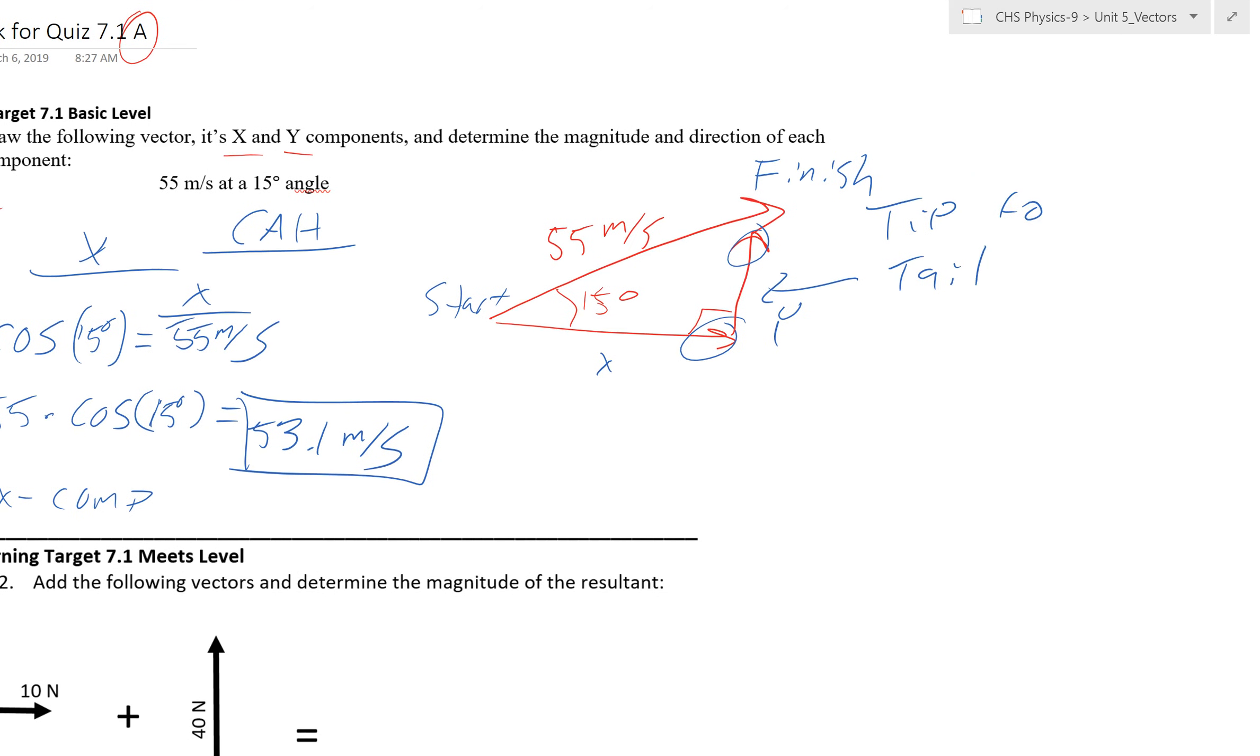And then for the y direction, we just have the same thing, but sine is SOH in SOHCAHTOA, so opposite, so the y this time. And so we've got the sine of 15 degrees equals y over 55 meters per second. So you end up with 55 times the sine of 15 degrees equals, it should have gotten something close to 14.2 meters per second.